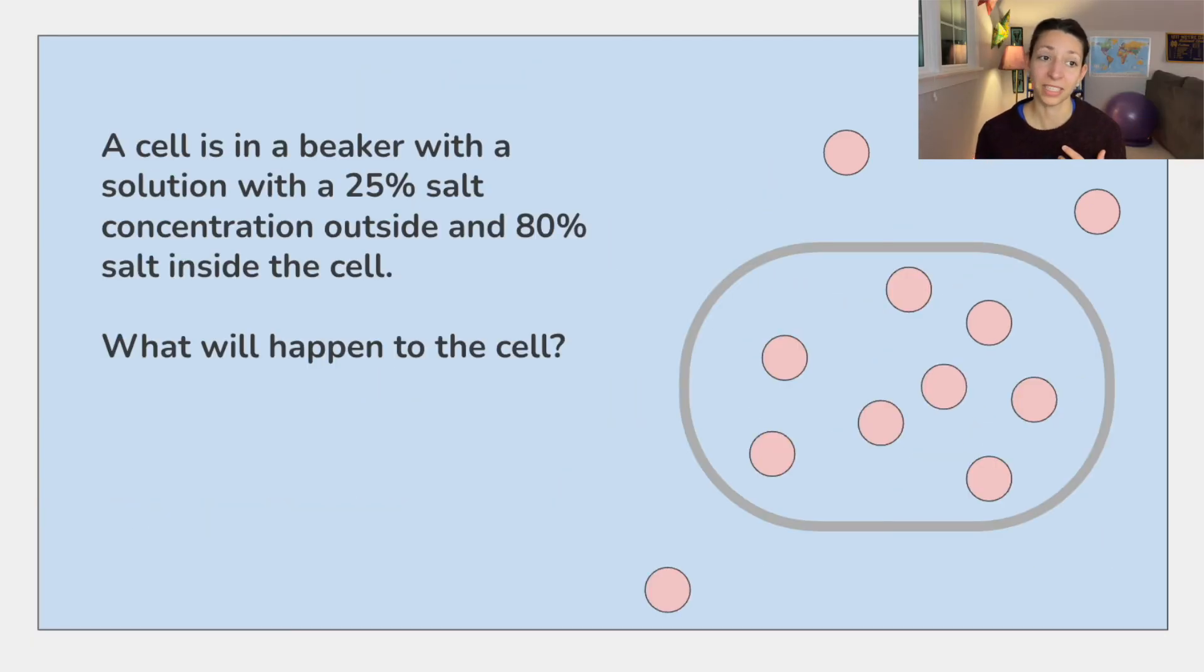All right, finally, our last one. A cell is in a beaker with a solution with a 25% salt concentration outside and an 80% salt concentration inside the cell. What will happen to the cell? Think about it. Water will move in and the cell could swell or even burst.